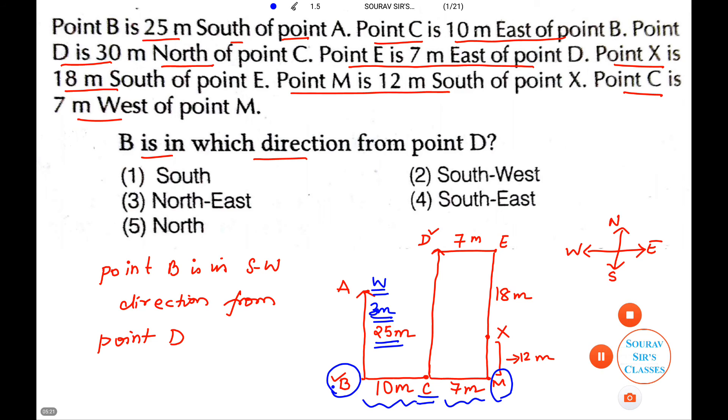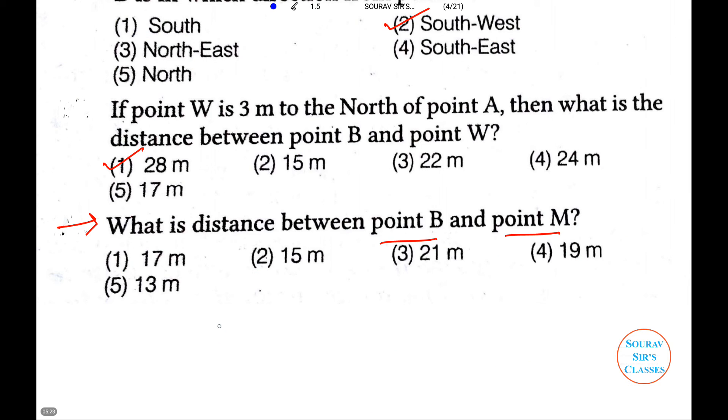So, let us do this. So, we have the distance between point B and point M is equal to BC, the length BC plus CM. So, it becomes 10 plus 7. So, the answer becomes 17 meters.